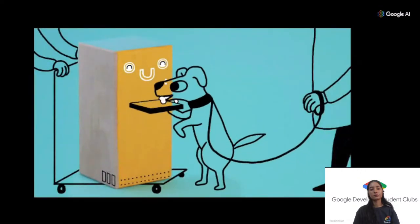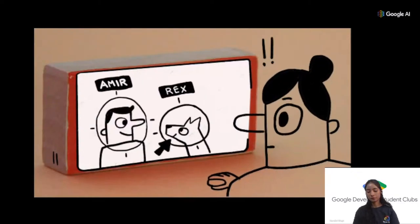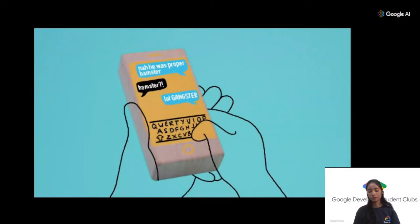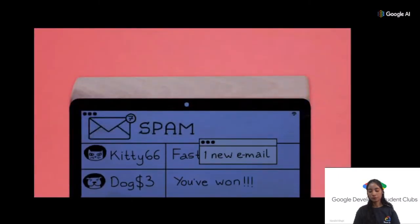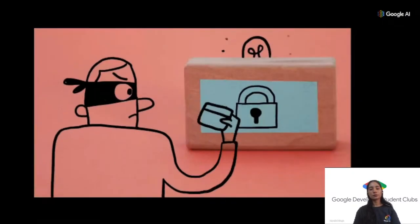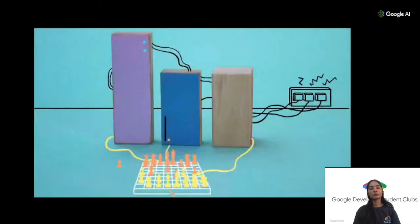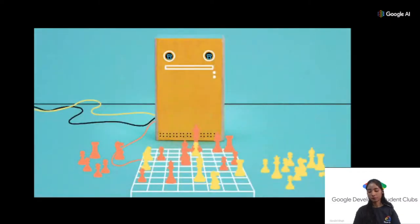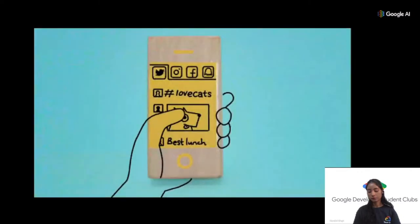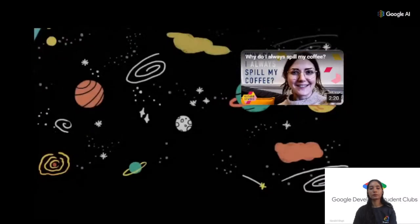Machine learning is already widely applied — it powers facial recognition, text and speech recognition, spam filters, online shopping recommendations, and credit card fraud detection. At the University of Oxford, researchers are combining statistics and computer science to build algorithms that solve complex problems more efficiently. The potential of machine learning to transform our world is truly mind-blowing.